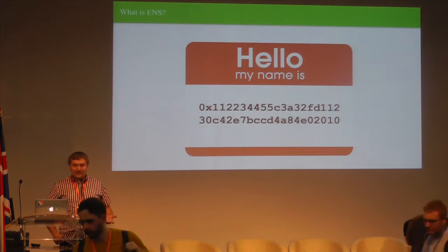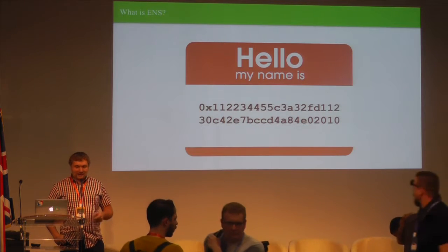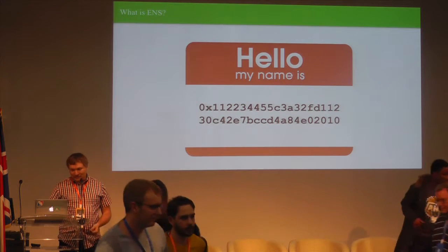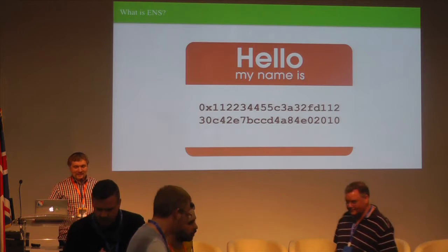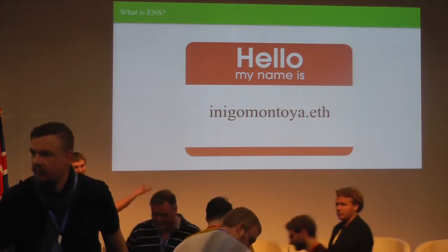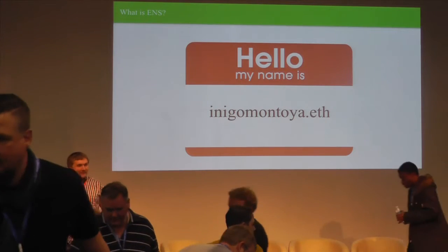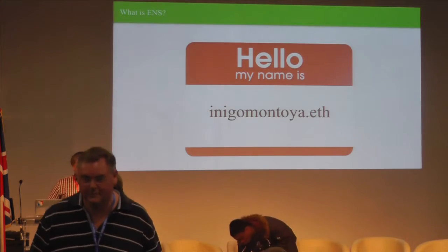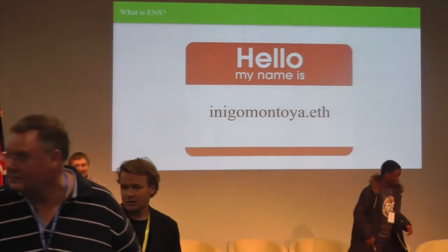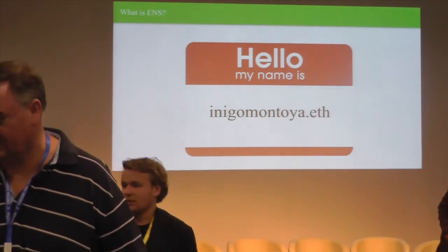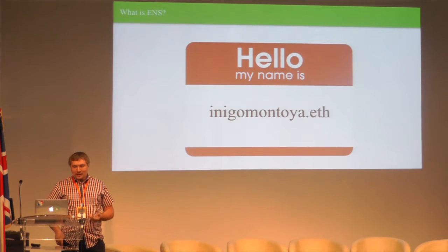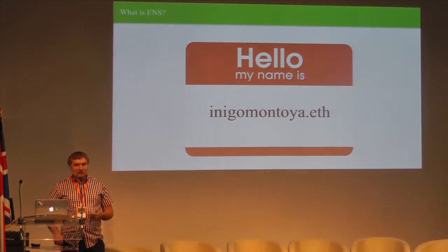ENS aims to solve this problem by providing human-readable identifiers to any identity on the blockchain. So instead of having to say my address is 30C42B7B etc., instead you'll be able to say my name is Inigo Montoya.eth. And this can be used not just to associate Ethereum addresses, but also a variety of other resources, such as swarm hashes and so forth.